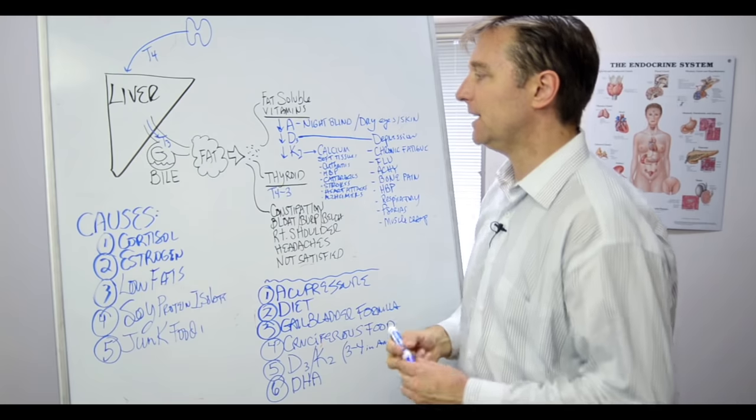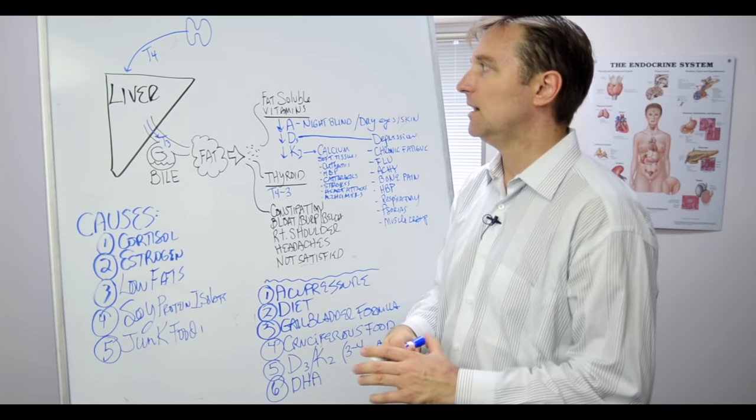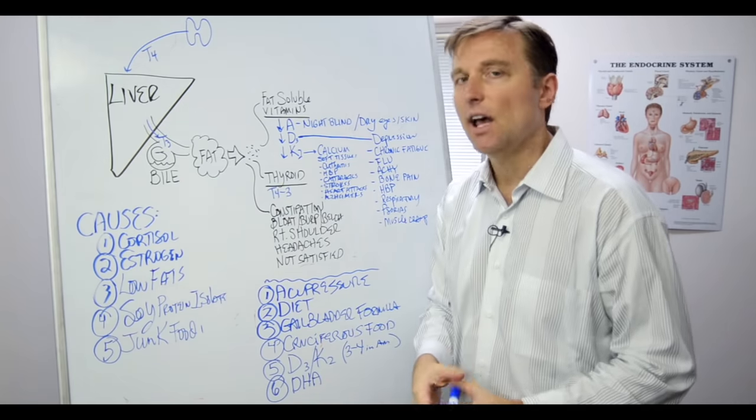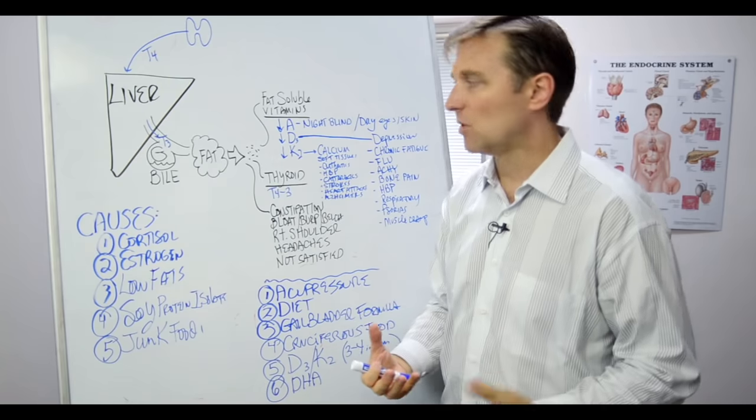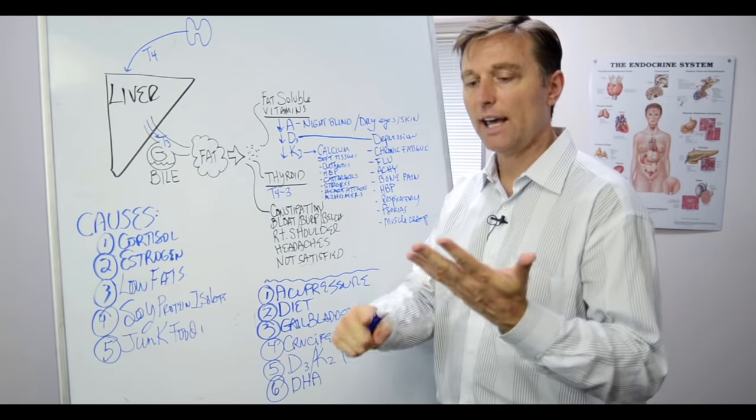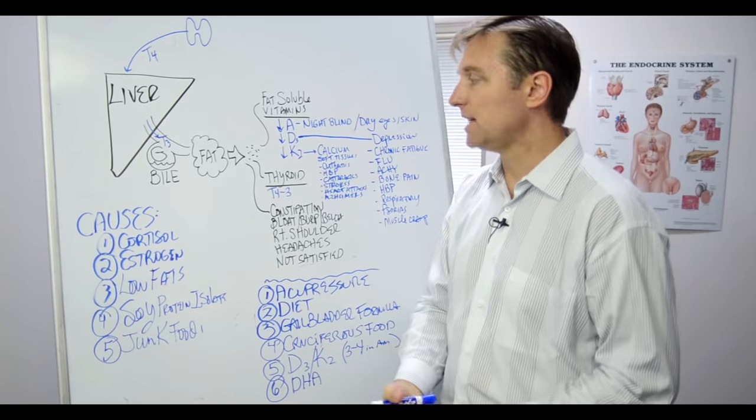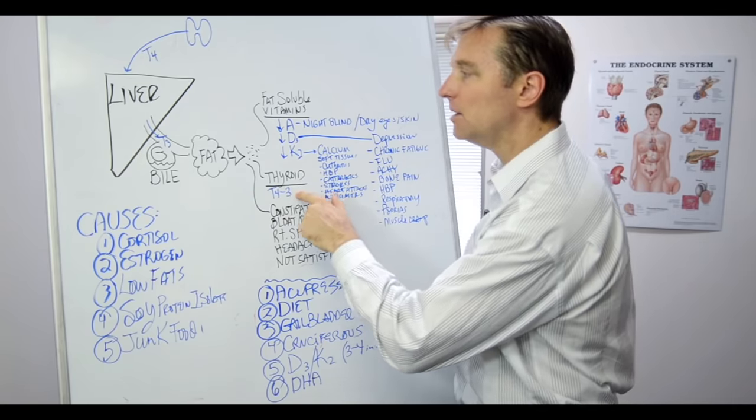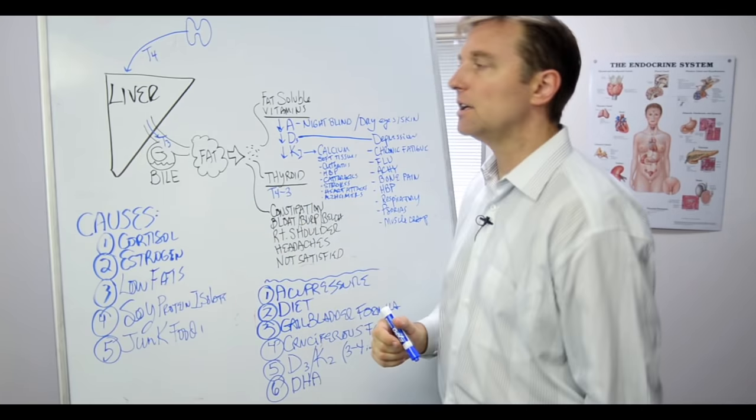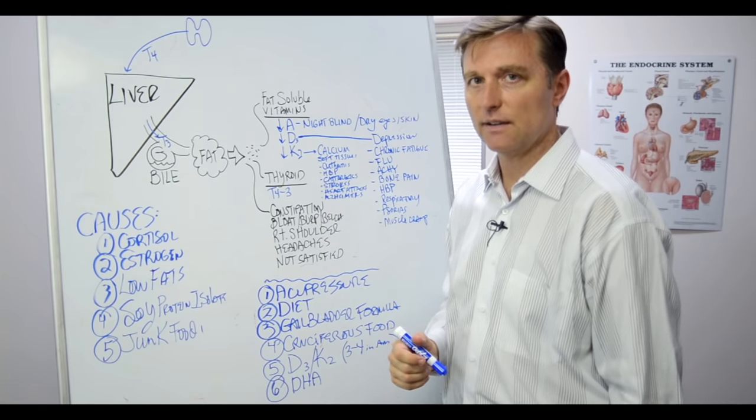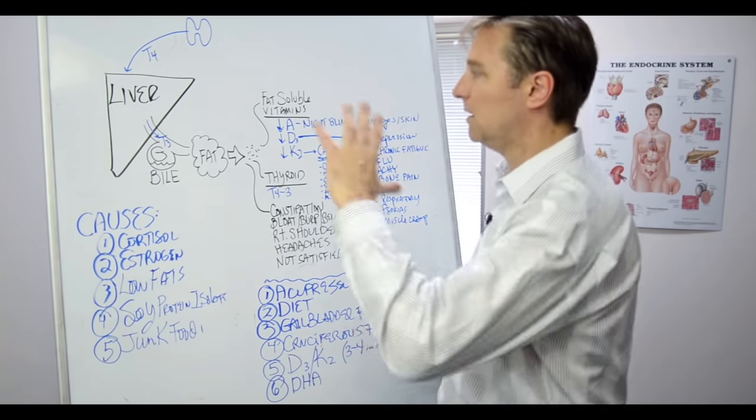80% of it occurs through the bile ducts in the liver. So here the person is taking thyroid medication, they don't have a thyroid gland anymore, or they have thyroid symptoms, dry hair, loss of eyebrows, slow metabolism. But in fact, it could be they don't have enough bile to convert T4 to T3. So we have to look at the broad spectrum.